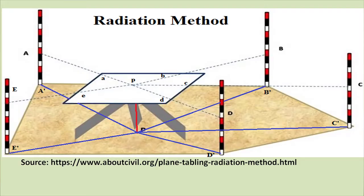In this slide we have shown the radiation method of plane table survey. The table is placed at station P, and objects A, B, C, D and E are surrounding the table and are to be surveyed. With the help of the alidade, we sight all these objects one by one and draw back rays, shown by dotted lines on top of the table. Once all objects are sighted, we take the ground distance of each and then using the reduced scale, plot their positions on the plane table as shown by points a, b, c, d, e in small letters.